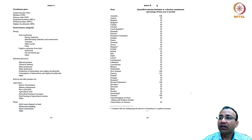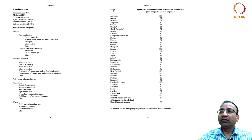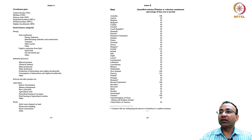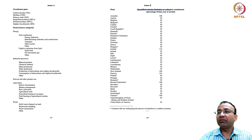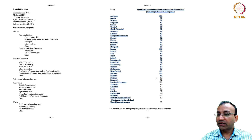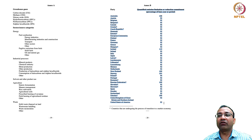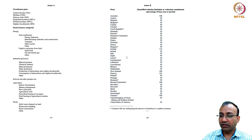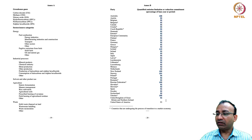In Annex B, you can see the different parties — the member countries — which are enlisted here and their quantified emission limitation or reduction commitment, as a percentage of base year or period. So you can see these countries and what is expected of them overall, with the numbers visible on the right side.